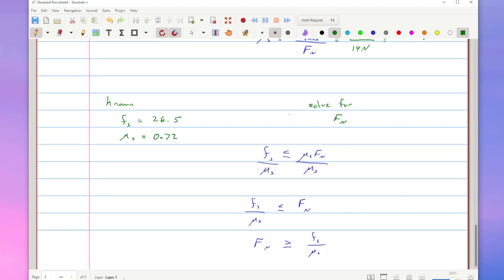So if I take these values and put them in my 26.5 divided by 0.72, and again, that static friction, so that has to have a unit of newtons. What I get for this case is that my normal force has to be at least 36.8 newtons.